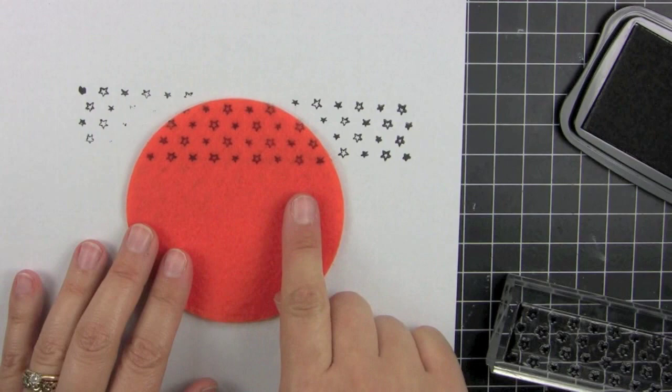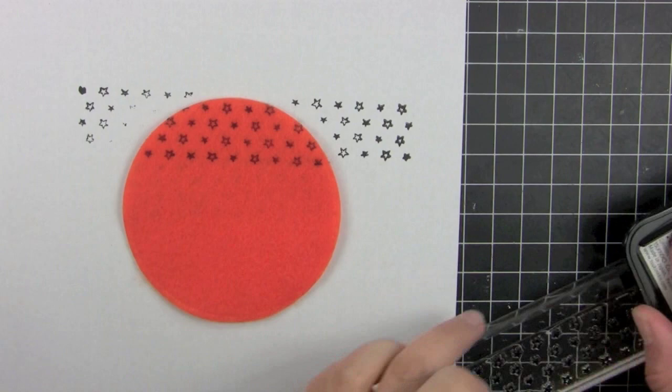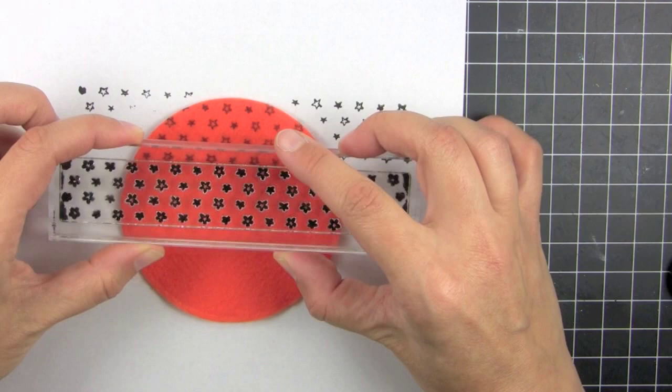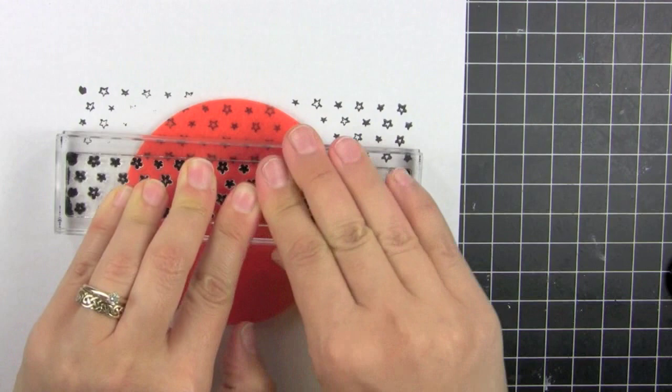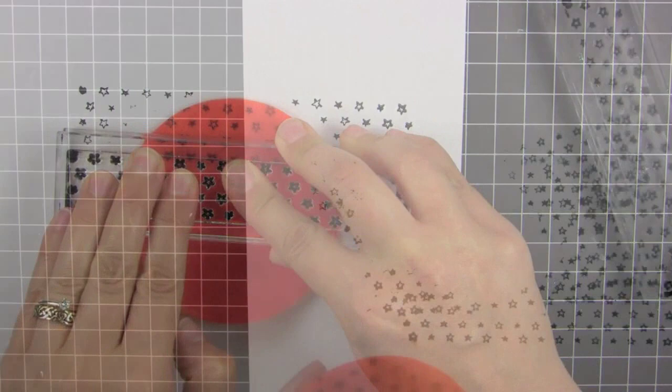There you can see the first row. Then I'm going to try to get the second row without getting my head in the camera. You just keep stamping row after row, line that up, press and stamp again, and continue doing this all the way down.